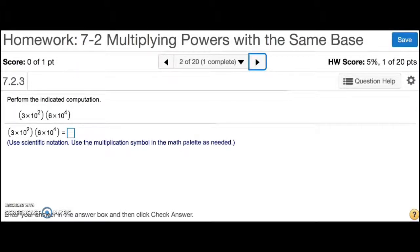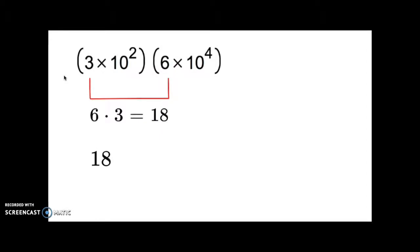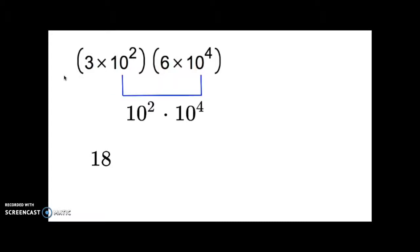Number 2 is asking me to perform the indicated computation. Notice we have two terms in scientific notation — that's how it wants the answer presented. To multiply these together, we're going to multiply in parts. Start by multiplying the two constants without exponents together: multiply the 3 and 6 together and get 18. Now we multiply the tens with the exponents together. 10 squared times 10 to the 4th means we add the exponents, so we get 10 to the 6th. So we'll have 18 times 10 to the 6th.